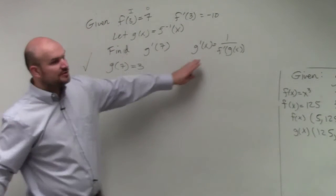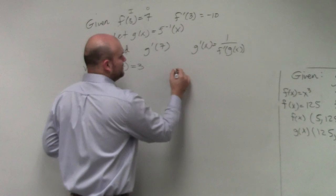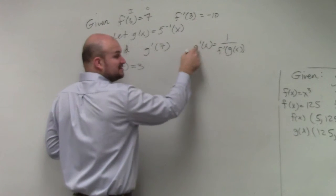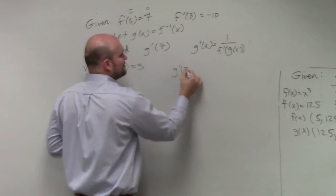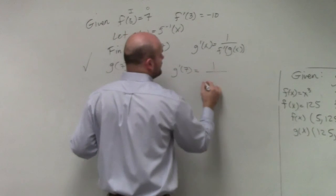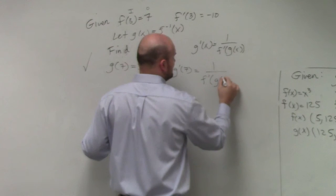Because if I'm going to find g prime of 7, so here's g prime. Here's how to take the derivative of the inverse function. So if you're trying to find g prime of 7, you're going to have 1 over f inverse of g of 7.